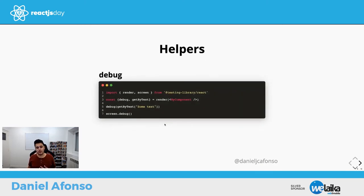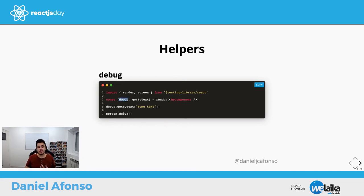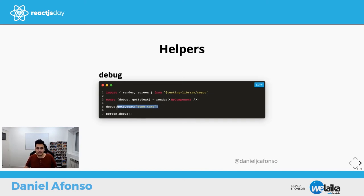Last but not least, the debug function lets you see the current aspect of your component in the DOM. You can either destructure it from the render result or use it via the screen object. If you don't pass anything, it prints the current DOM state. If you pass a component reference, it shows just that component.